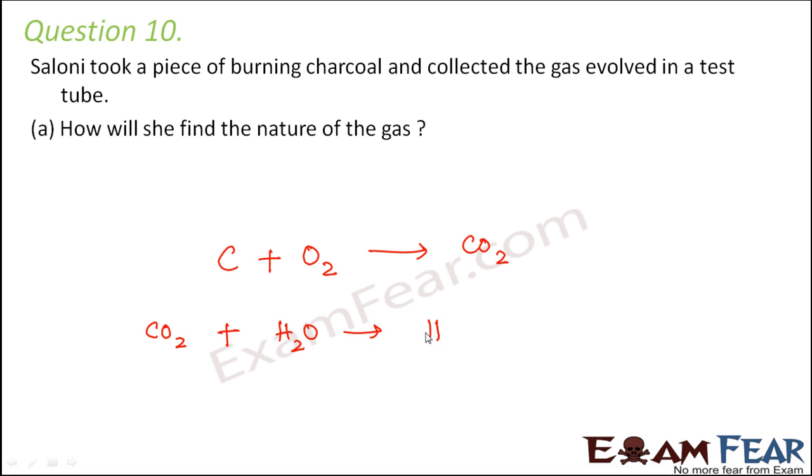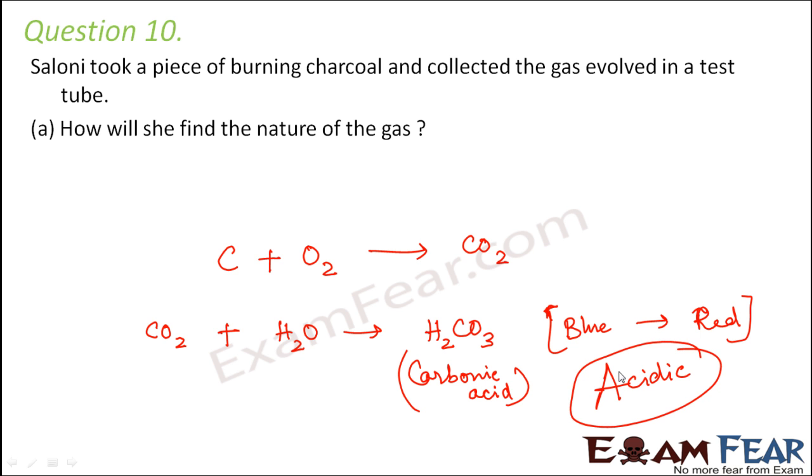This forms H2CO3. Now in this solution, you put the litmus. You find that the blue litmus turns red, which proves that this is an acid - carbonic acid. So this proves that it is acidic in nature. This is how she will find out.